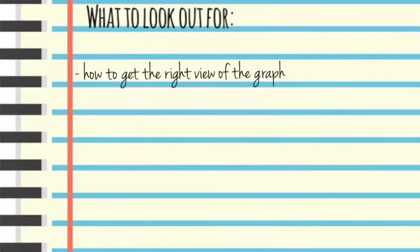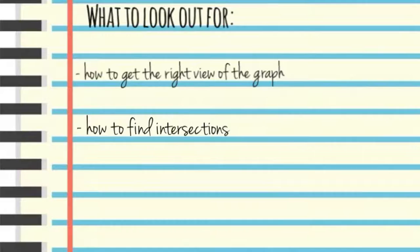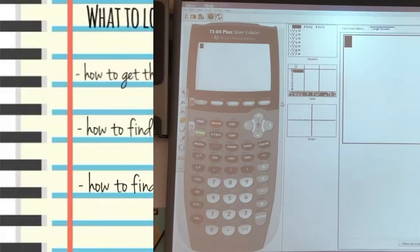The main things to look out for in today's video are how you can get the right view of the graph, how to find the intersections—aka finding the solutions—and how to find the zeros in a quadratic equation.